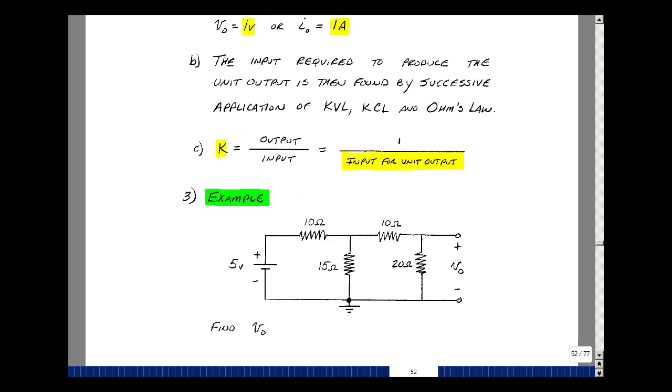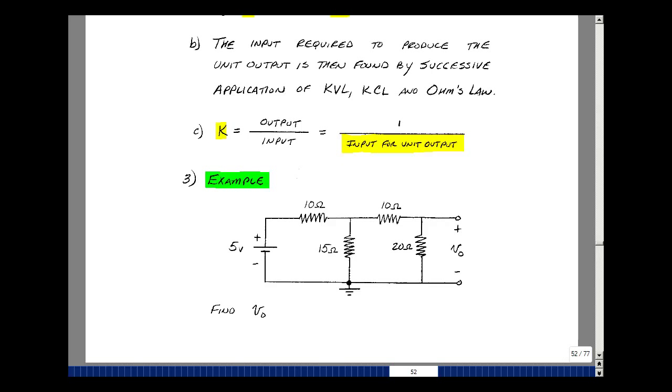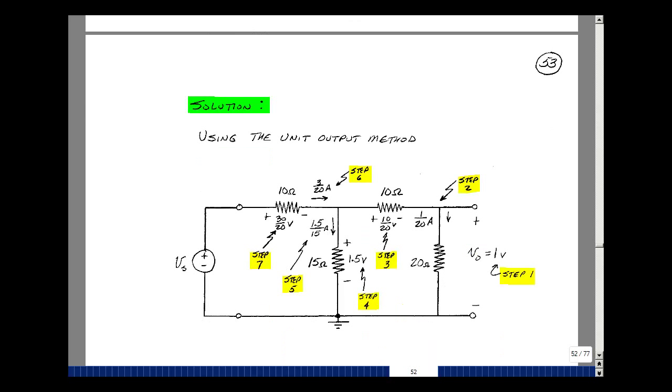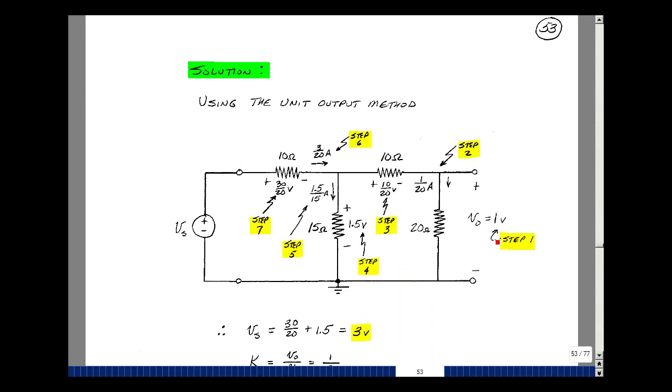Suppose I have a 5-volt source here and I want to find the voltage out here. We've got a whole bunch of techniques for doing this, one of which was the mesh equations. Let's take a look at this unit output method. Since my output's a voltage, I'm going to set it equal to 1. That's what I have right here.